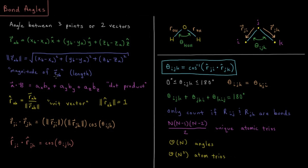We have the concept of the magnitude of a vector, which you can review from the vectors video in the math review playlist. The magnitude of a vector is basically like the bond length between two points, as computed from previous videos. It comes from the Pythagorean theorem: the square root of (X final minus X initial) squared plus (Y final minus Y initial) squared plus (Z final minus Z initial) squared. Additionally, the dot product of vectors A and B in three dimensions is AX times BX plus AY times BY plus AZ times BZ.